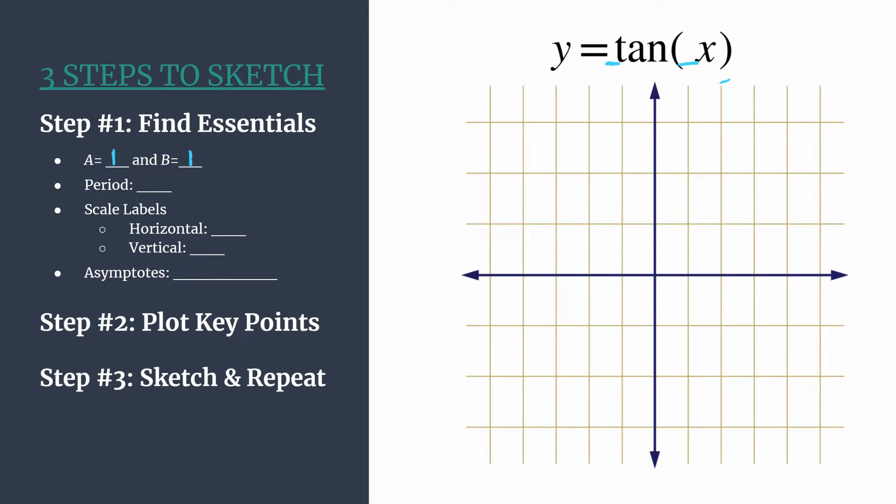Now we can calculate the period. Remember, period is just the length of a horizontal cycle. And for tangent, we calculate that by π over b. So π over one is just π in this case.